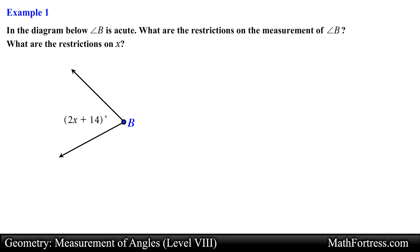To determine the restrictions on the measurement of angle B we will start with the definition of acute angles. Recall that acute angles are greater than 0 degrees but less than 90 degrees. This means that angle B has to be greater than 0 degrees and less than 90 degrees. In other words, the measurement of angle B is between 0 and 90 degrees exclusive.